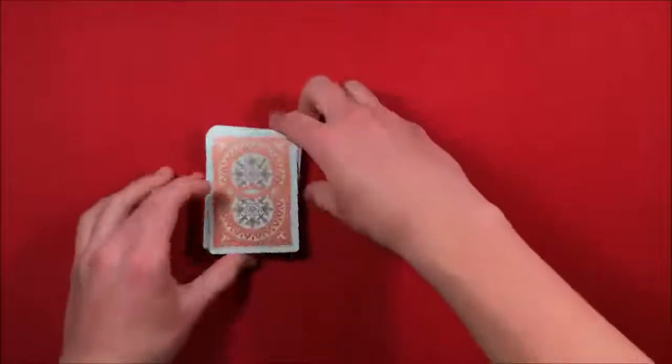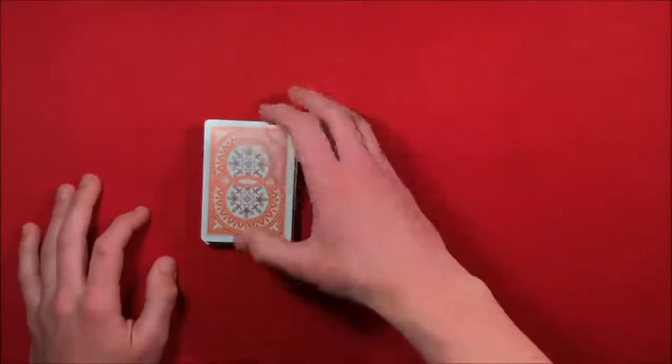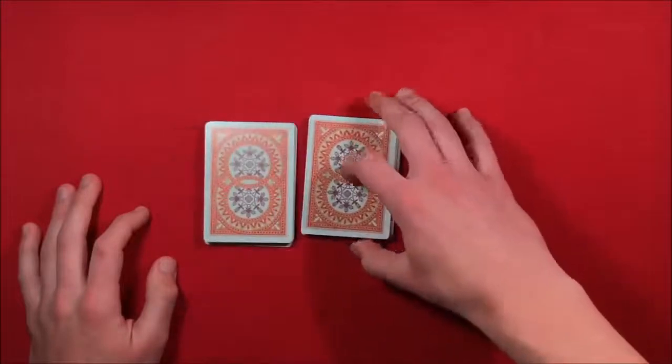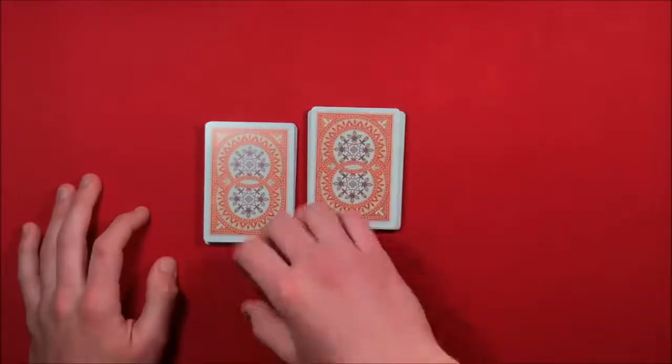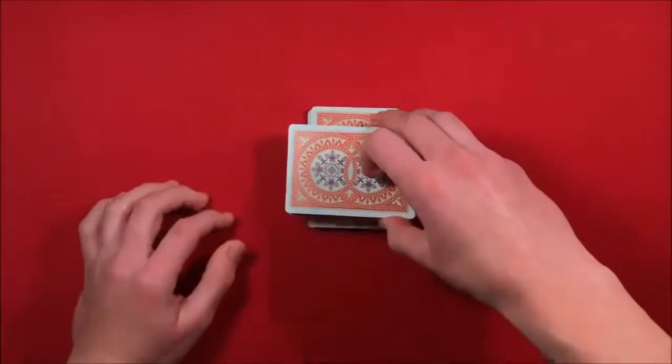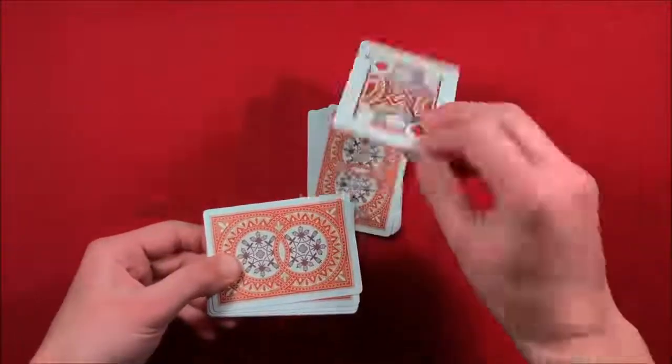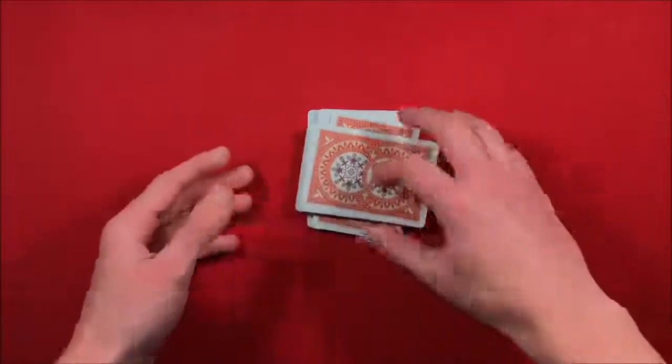And then what you do is when you cut the cards you're going to tell the spectator okay cut the cards anywhere you like. You move the card pack over to the right or whatever the spectator does, you take the bottom half of the packet and you tilt it and you put it on top of the other packet and the top card is going to be right there. So that's kind of how the trick works.